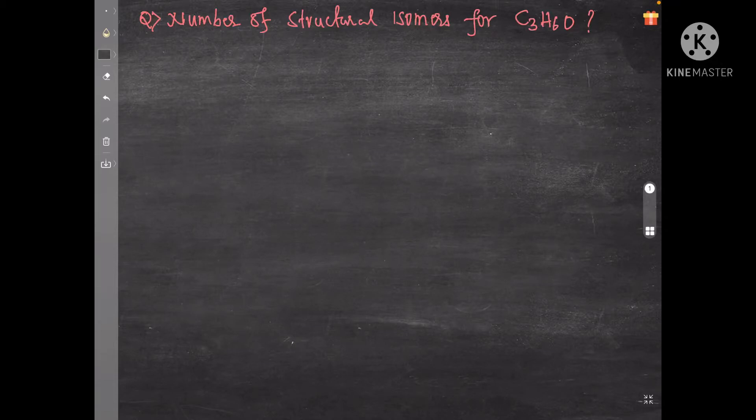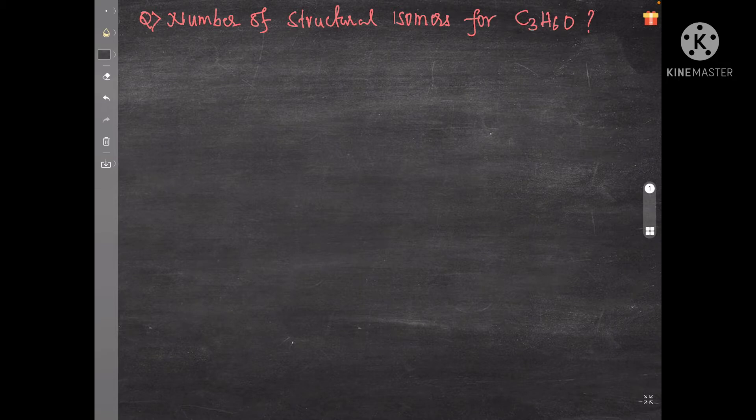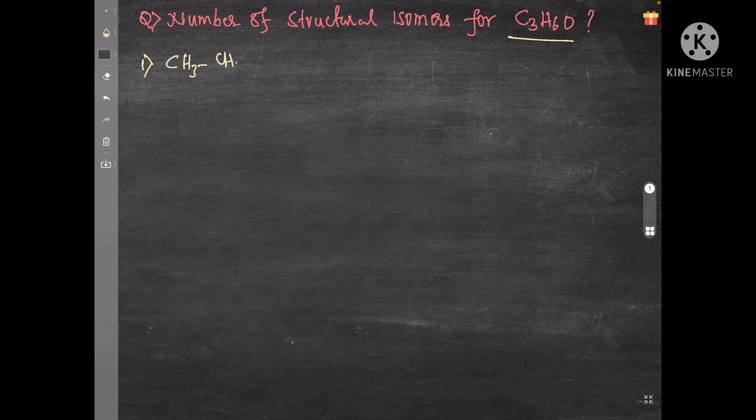Hi everyone, one question related to isomers: number of structural isomers for C3H6O. Let us see the possible isomers. CH3CH2CHO.